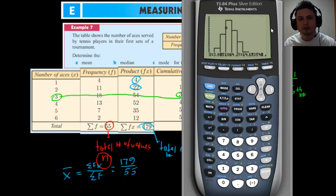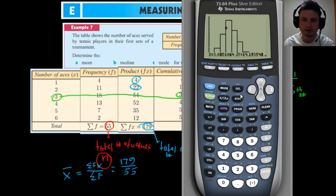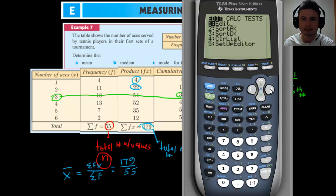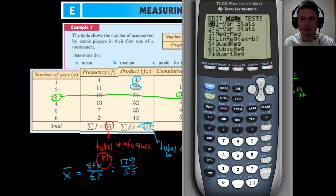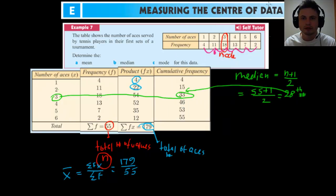If you're answering your question entirely on your calculator, make sure to provide the button presses you used — write down STAT, CALC, one-variable stats, and so on. Anyway, this is pretty much it for measuring center of the data, or essentially measuring mean, mode, range, and median, which are some of the values you'll be seeing a lot in statistics.